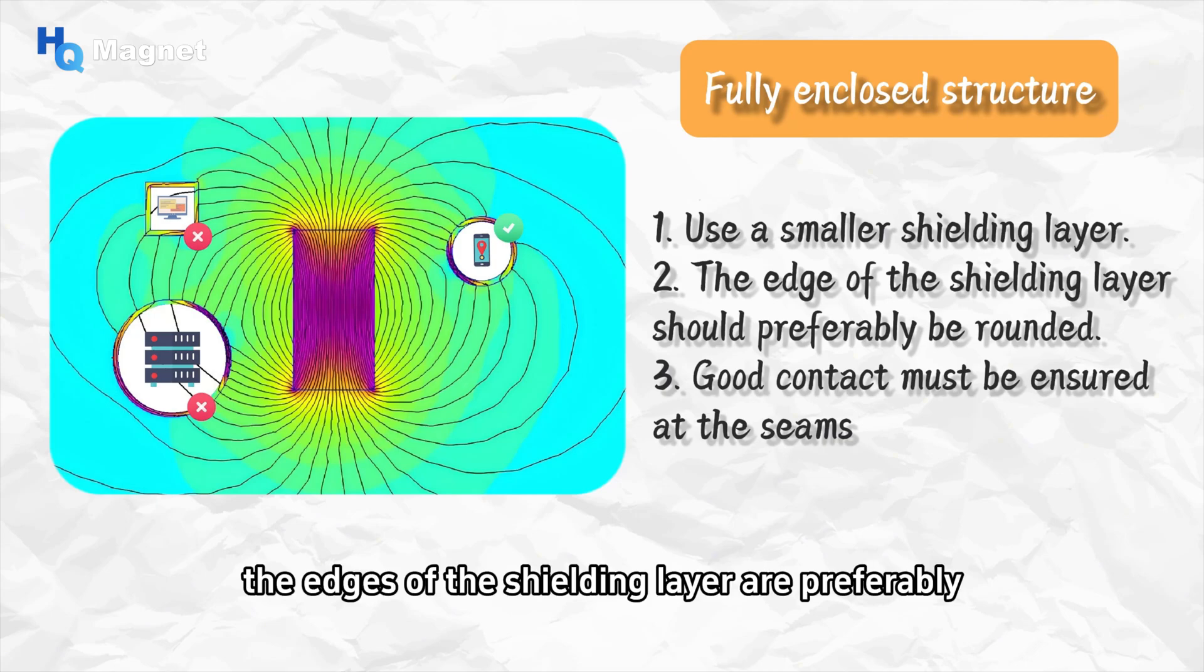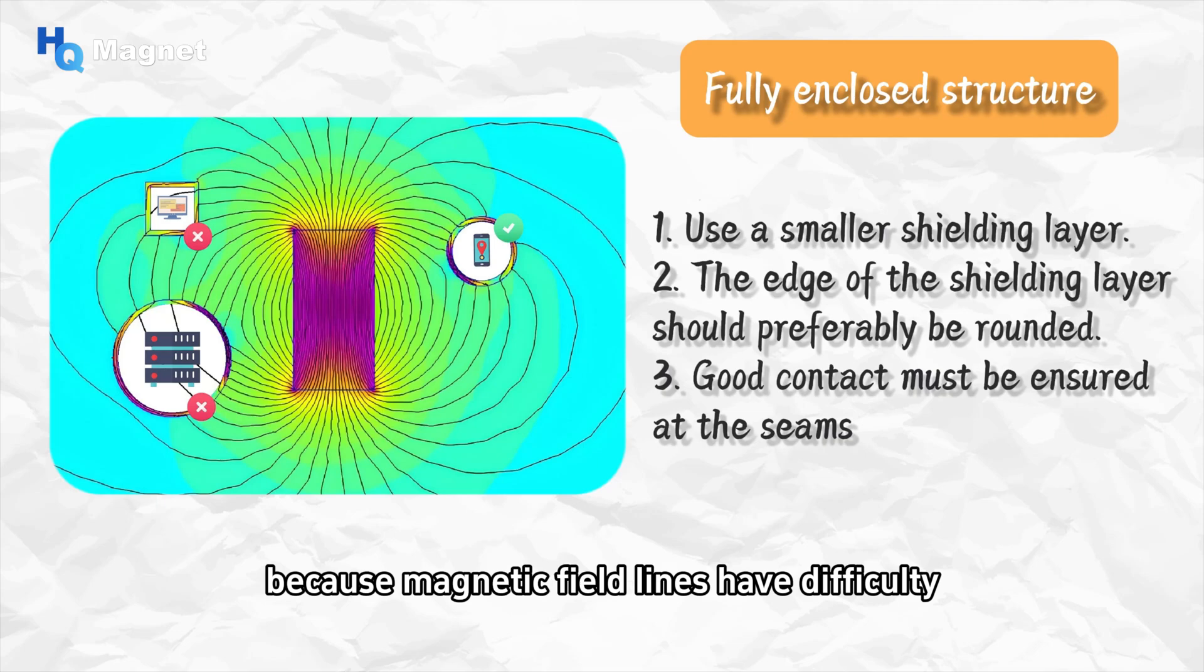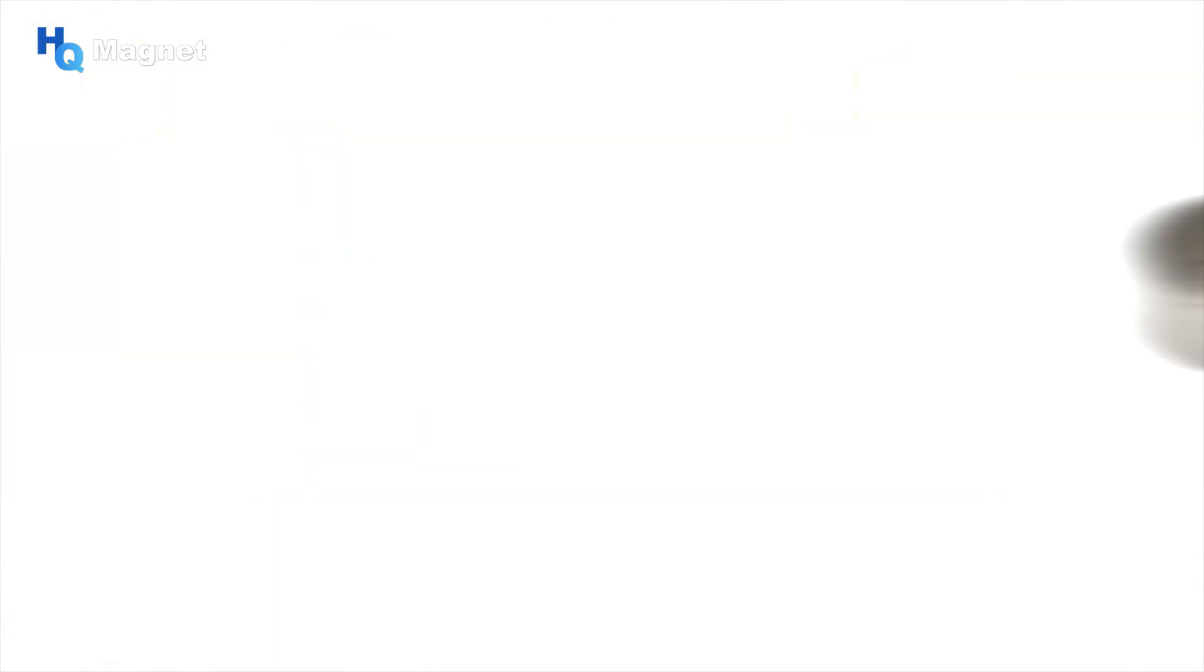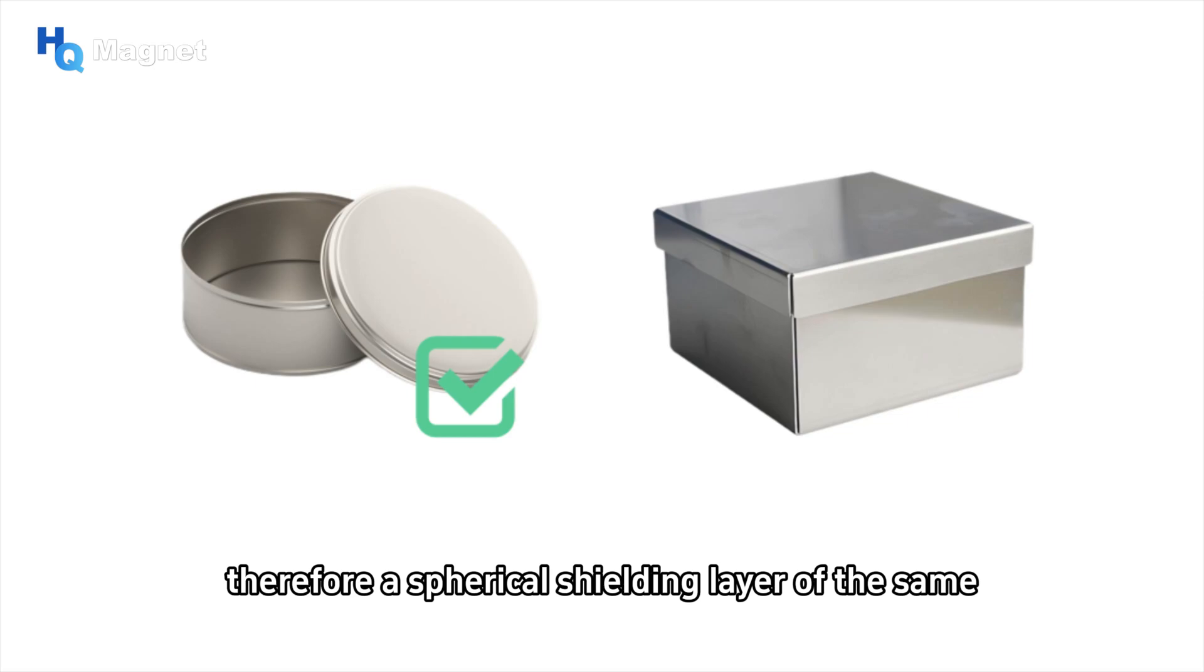The edges of the shielding layer are preferably rounded corners, because magnetic field lines have difficulty suddenly changing direction at a 90-degree angle. At the sharp edges of the shielding layer, they may break through the shielding layer and enter the protected area. Therefore, a spherical shielding layer of the same size has a better shielding effect than a rectangular one.